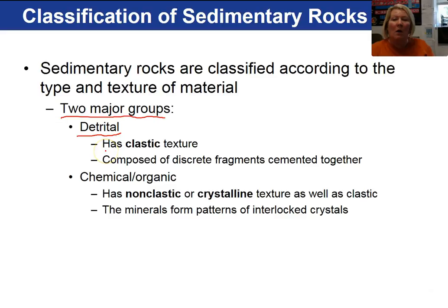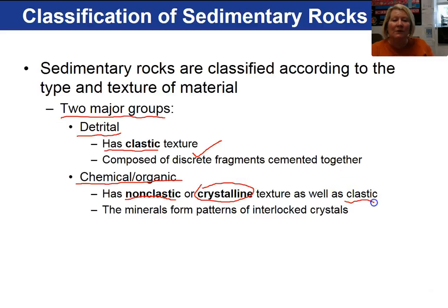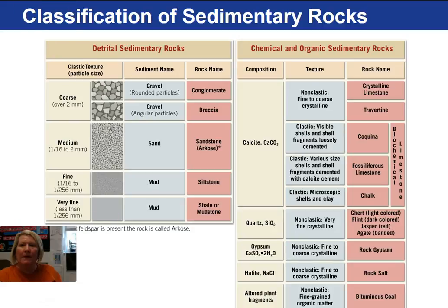All detrital sedimentary rocks have clastic textures, which means that they are composed of discrete fragments cemented together, whether the fragment be clay, silt, sand, or gravel. Chemical and organic sedimentary rocks can have non-clastic, or what we call crystalline textures, as well as clastic textures. In crystalline textures, there is a pattern of interlocking crystals.